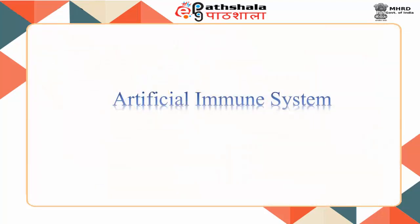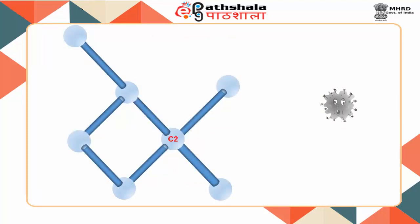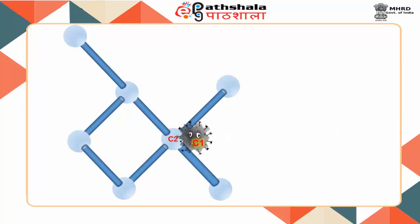Artificial immune system — a cell in our body can recognize a foreign cell and inform the other cells that a foreign cell has entered our system.